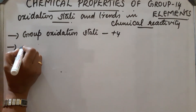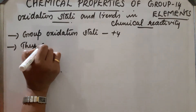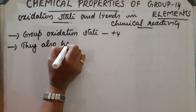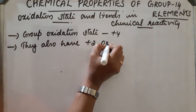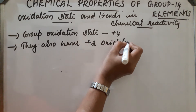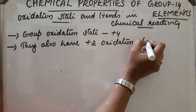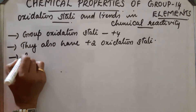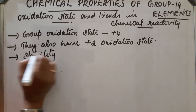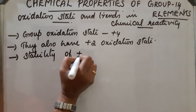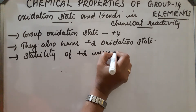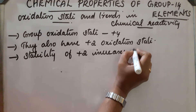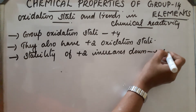Group 14 elements also have a plus 2 oxidation state. The stability of the plus 2 oxidation state increases down the group. This is due to the inert pair effect.